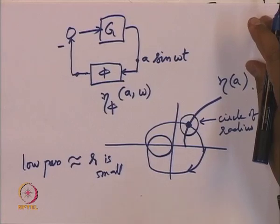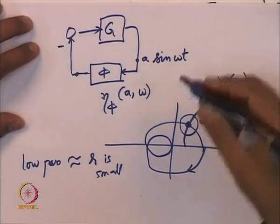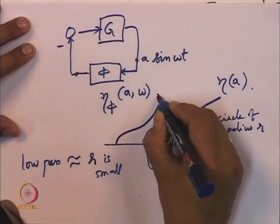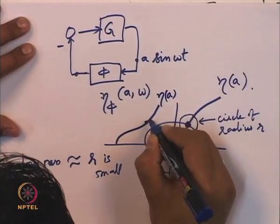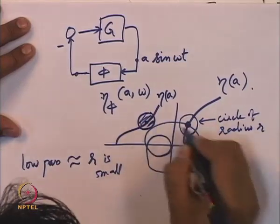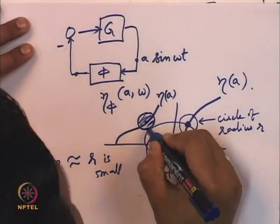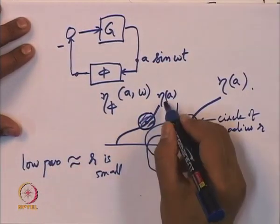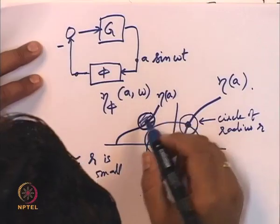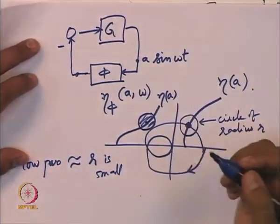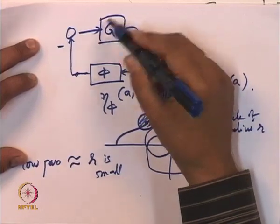A sufficient condition for non-existence of periodic orbits is that the describing function curve, even when you expand it into a ball of radius r, still has no intersection with the Nyquist plot of G. The size of the ball depends on how much of a low-pass filter G is — how much it attenuates higher harmonics — because the describing function only captures the first harmonic, and the relevance of the ignored higher harmonics depends on how low-pass G is.